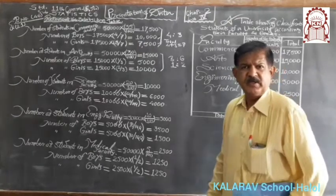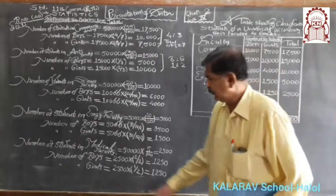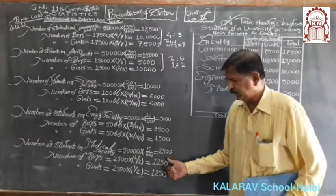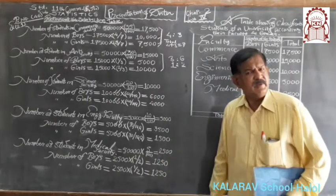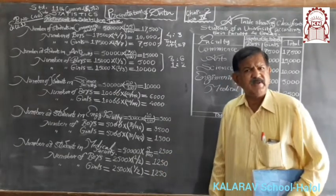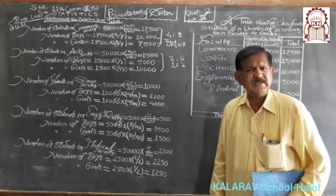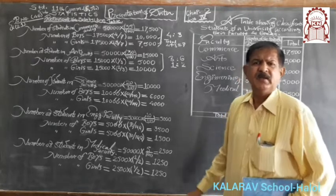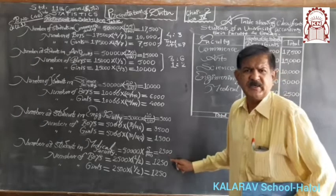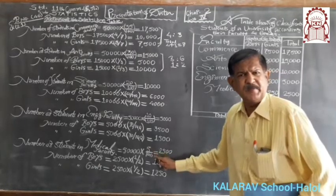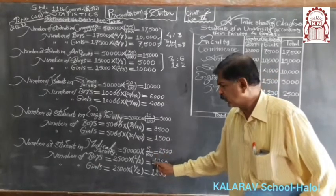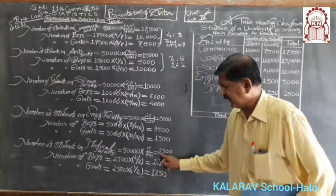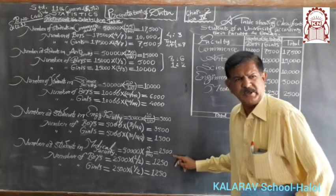In medical faculty, the number of boys and girls are equal. Therefore, number of boys equals 1,250 and number of girls equals 1,250 — exactly half of the total 2,500 students in medical faculty.